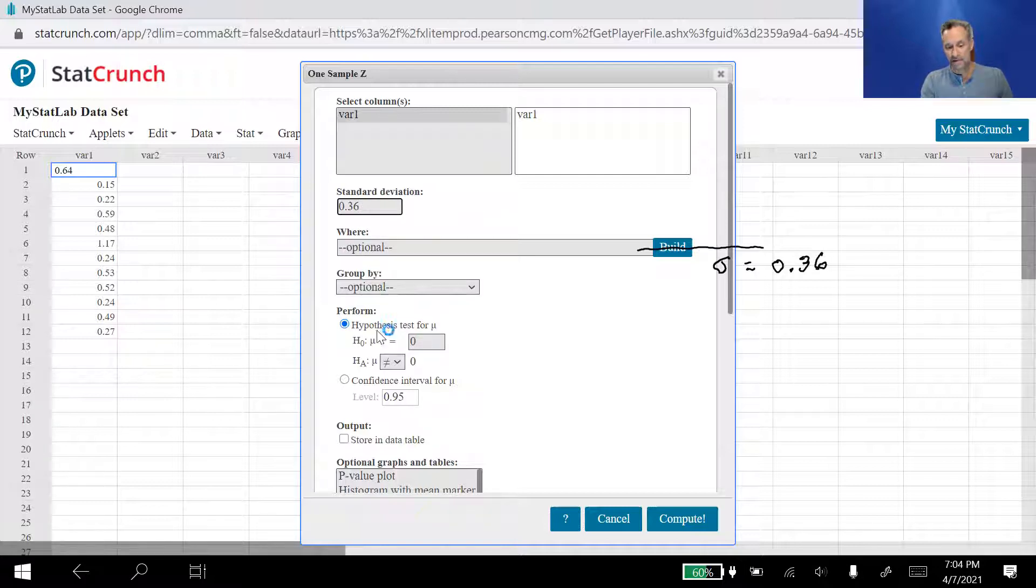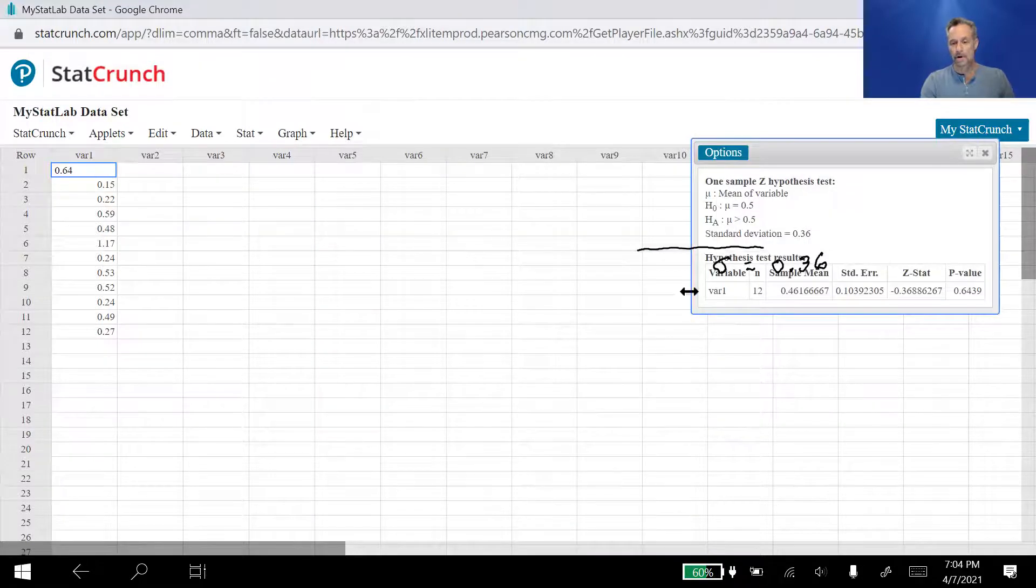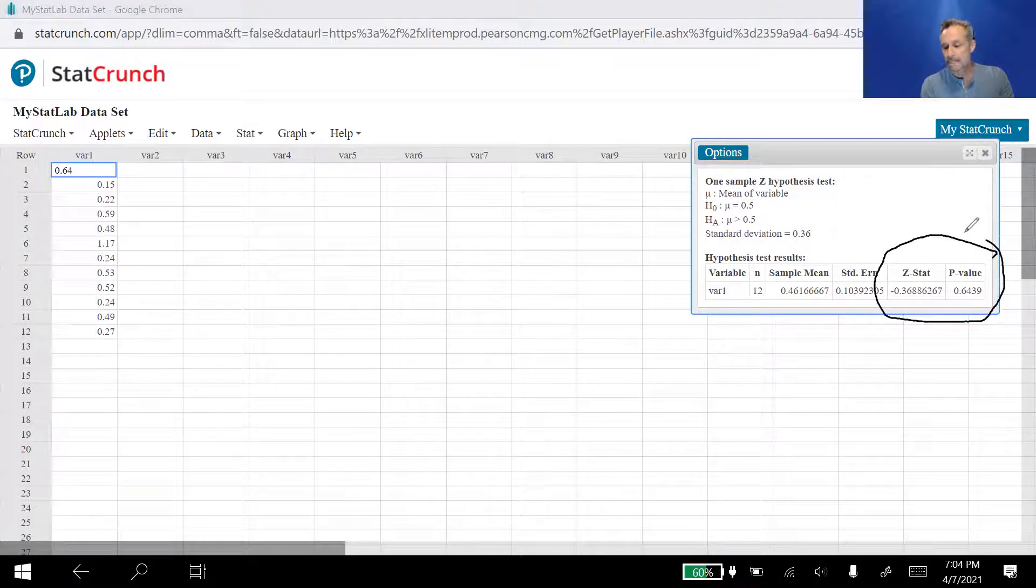And that's all we need to do. We come down here to where it says hypothesis test. Well, we're testing to see if mu was equal to 0.5 or greater than 0.5. So we do have to make sure our null and alternative hypotheses are correct. But then we just compute. And what I'm getting from here are two things: I'm getting the Z value here, it's a Z stat, and the P value.